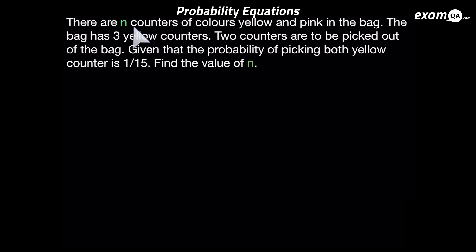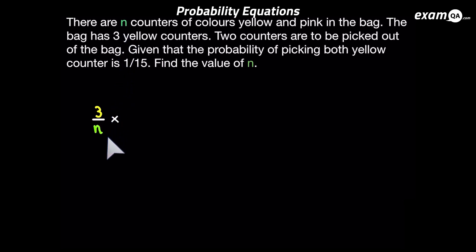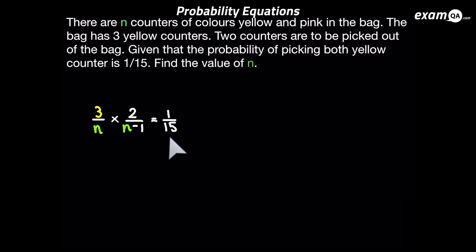Since the question has told us the probability of picking two yellow counters, we're going to make an equation about that. When we're picking our first yellow counter, we know there are three yellow counters in the bag and the total is n, so it's simply 3 over n. Now we need to pick another yellow counter — there's going to be one less yellow counter, so instead of three we have two, and instead of n total we have n minus 1. The question has told us the answer to this, so we can set it equal to 1 over 15. And we've got our probability equation.